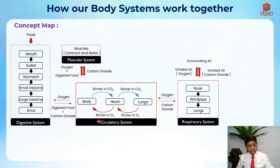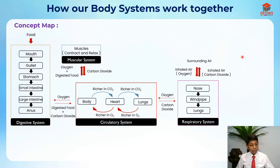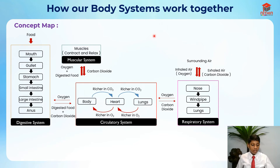The muscular system receives oxygen and digested food from the circulatory and digestive systems. After respiration it gives out carbon dioxide and energy. The carbon dioxide is given back to the circulatory system, goes back to the lungs, up the windpipe, and is exhaled. All these systems are linked together — it is crucial for all systems to function so we can operate properly, like a car where if one part is missing, the whole car won't work.